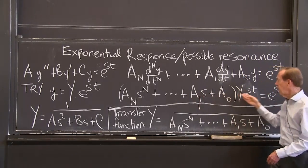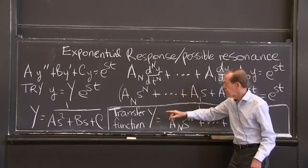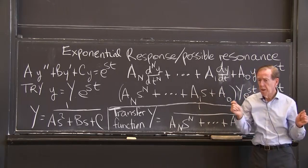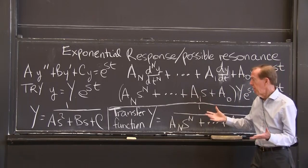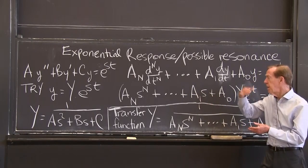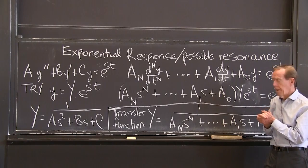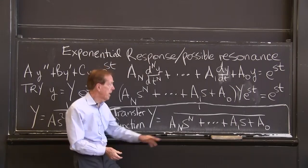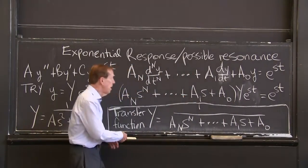n s's from the nth derivative, 1s from the first derivative, no s from the constant term. Do you see that equation is exactly like what we had before with a s squared plus b s plus c. We had quadratic equation, the most important case.